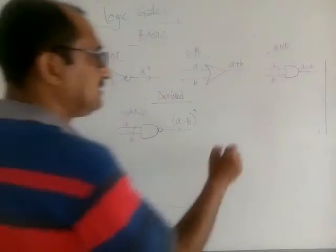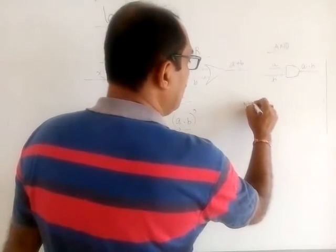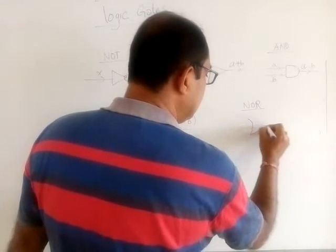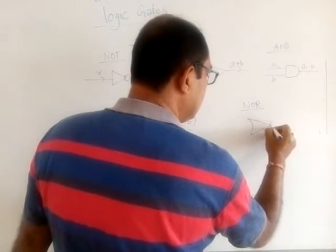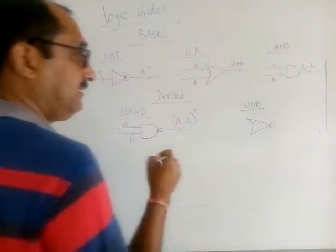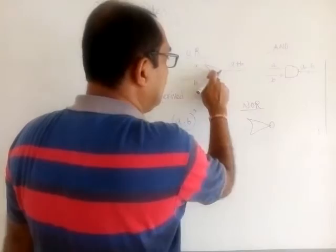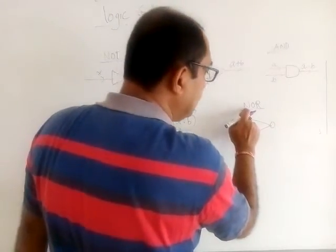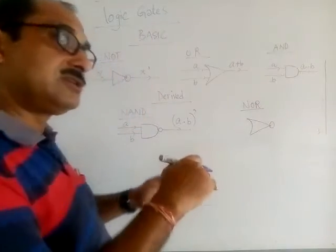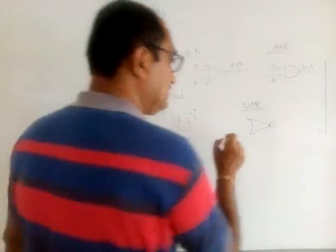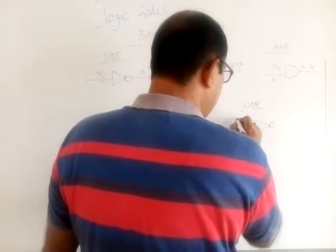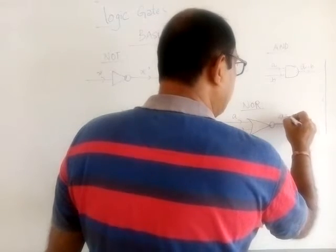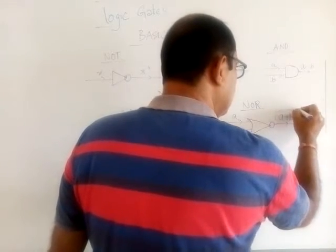Similarly, there is another gate called the NOR gate. The NOR gate looks like the OR gate with a circle at the output. It stands for NOT-OR — OR gate and NOT combined together. So if we pass two currents A and B, we are going to get (A plus B) complement — that is the output produced by the NOR gate.